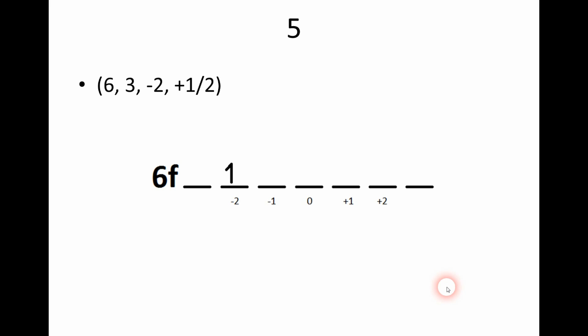Number five tells us to draw an orbital diagram for an electron whose quantum numbers are six, three, negative two, and positive one-half. There is a six because N equals six. It's in the F sublevel because L equals three. The electron is in the second orbital left of the middle because M sub L equals negative two. And the arrow is pointing up because M sub S is positive one-half.